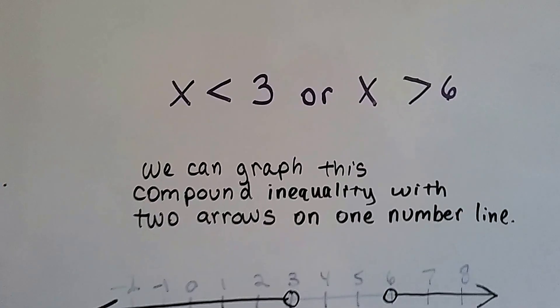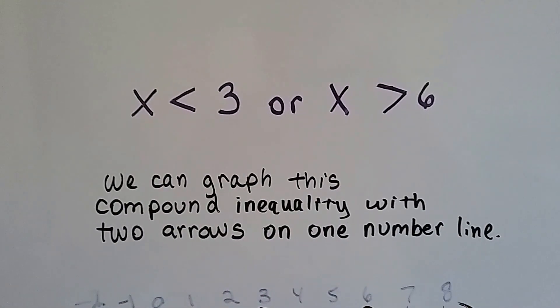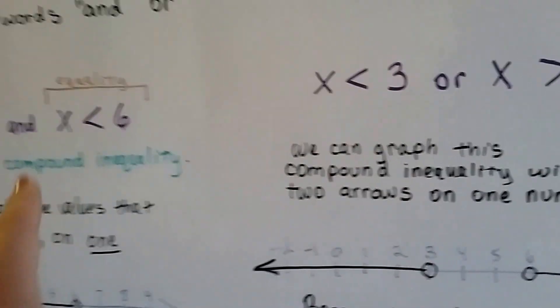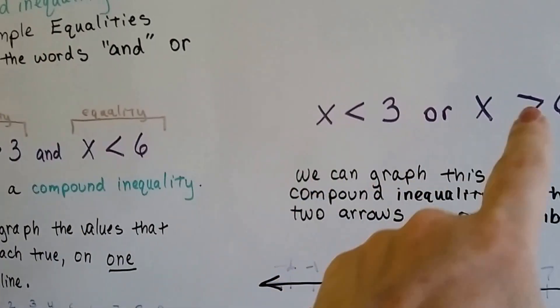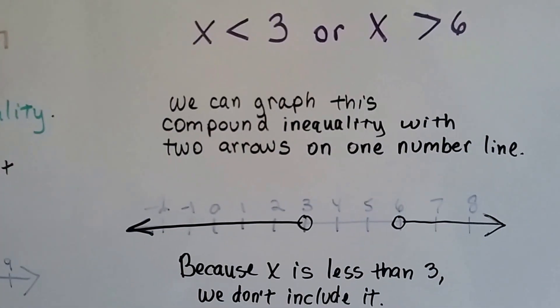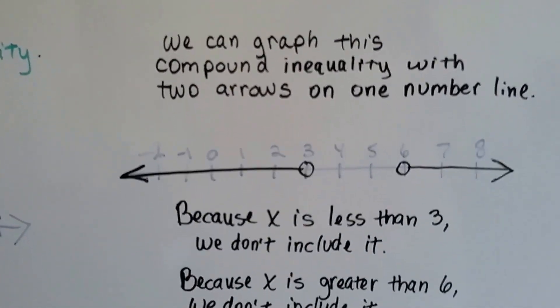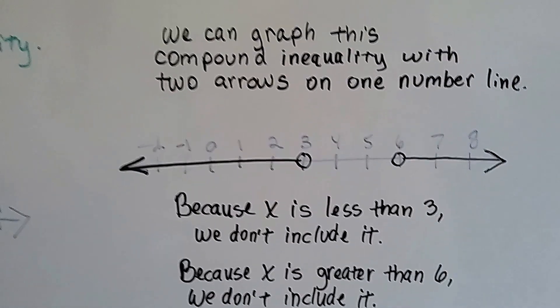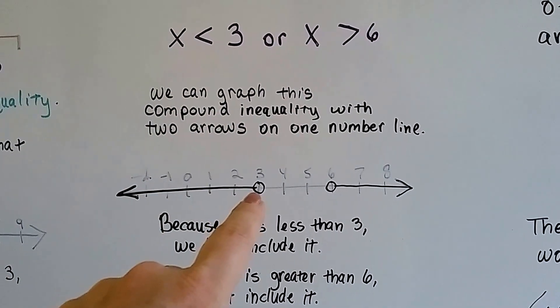If we're given X is less than 3 or X is greater than 6—I've got the signs flipped around—we can graph this compound inequality with two arrows on one number line. It says that X is less than 3. Well, it doesn't equal 3.